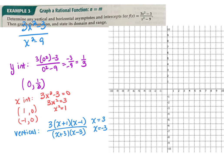For the horizontal asymptote, I'll use our shortcut. Looking at the degrees: numerator degree equals denominator degree — they're the same. So I use the ratio of leading coefficients: 3 over 1, giving y equals 3 as my horizontal asymptote.